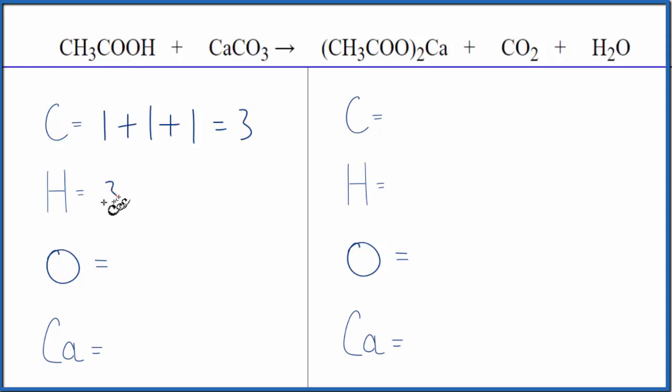Hydrogens, you have three plus the one here. So you have four hydrogen atoms. Oxygen's one, two, plus the three. So you have a total of five oxygen atoms and then just one calcium. So it's a little bit of work to count these up, but you have to be very careful.